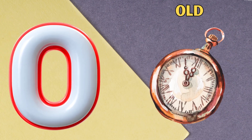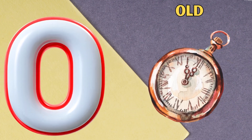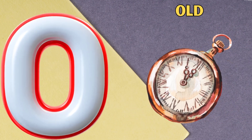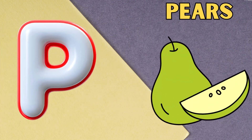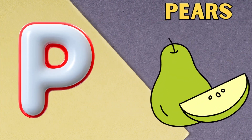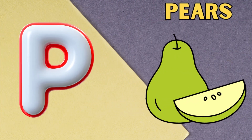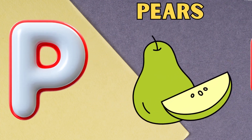O is for old, o, old. P is for pair, p, pair.